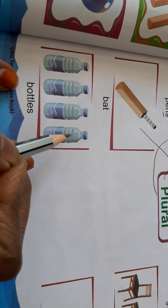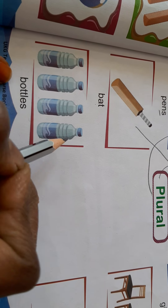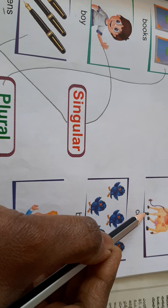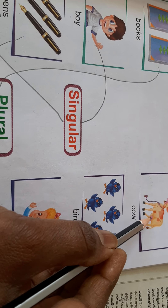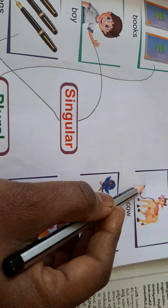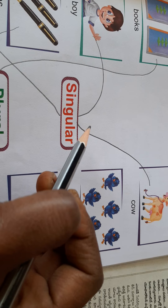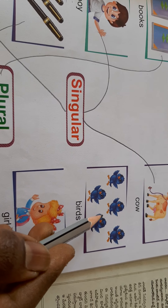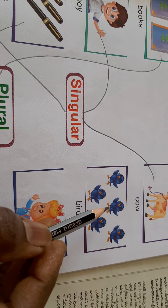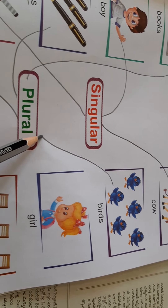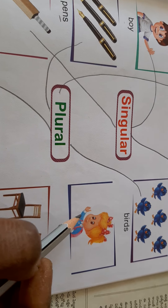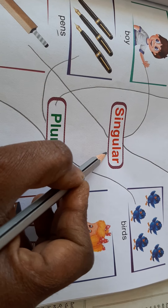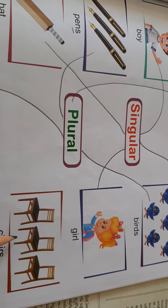Bottles — there are many bottles, so that is plural form. Plural matches plural. There is a cow — that is singular form, so singular matches singular. Next, birds — one, two, three, four, five — that is plural form, so plural matches. Girl — girl is singular form, so singular matches.